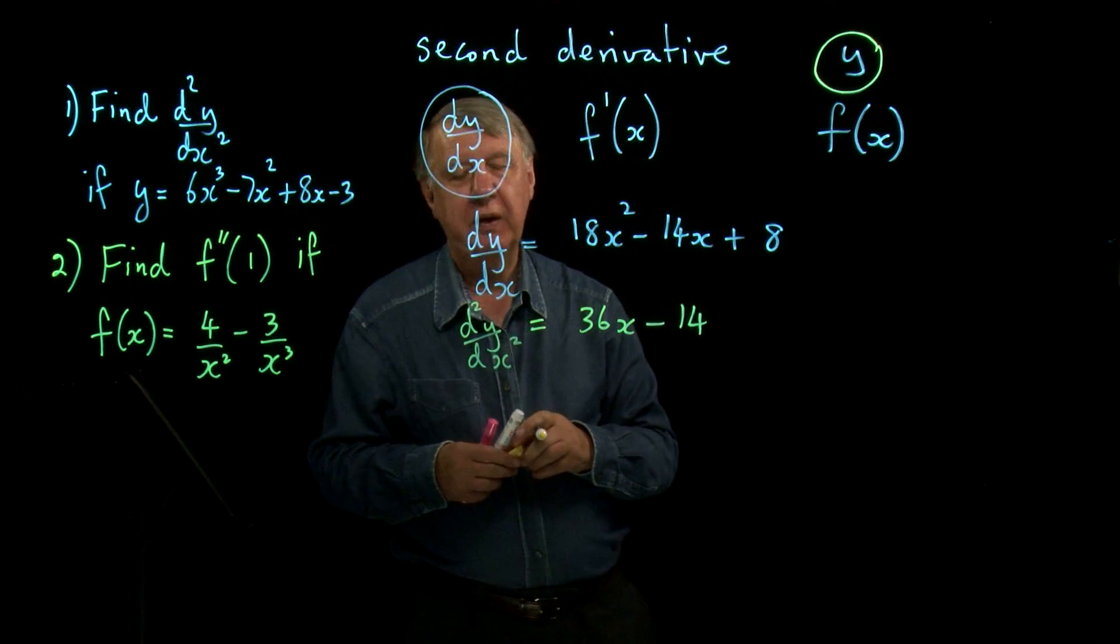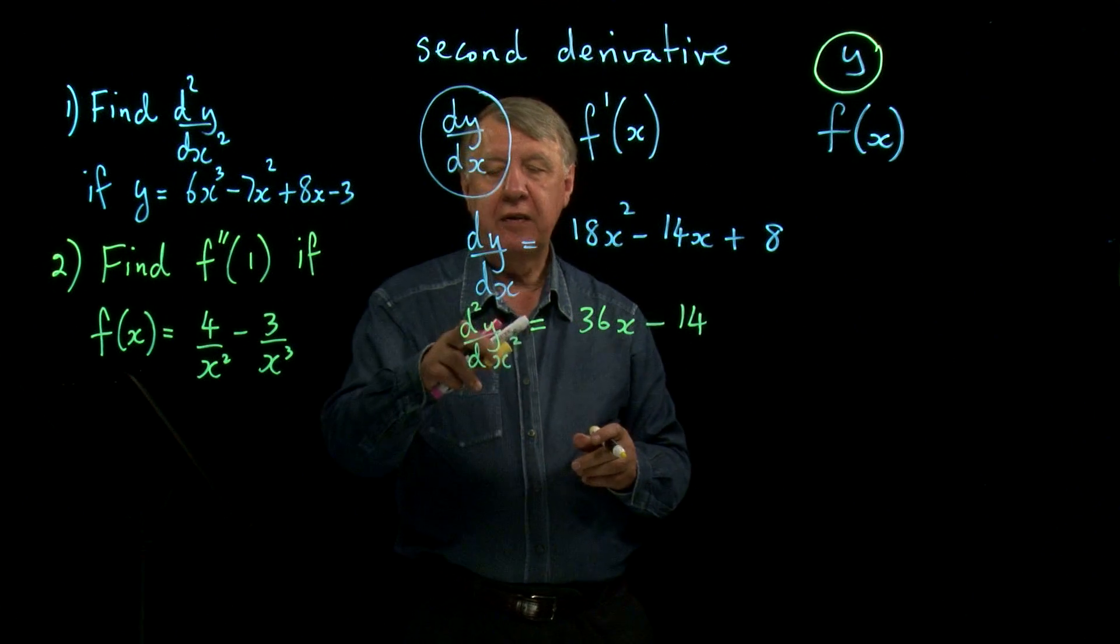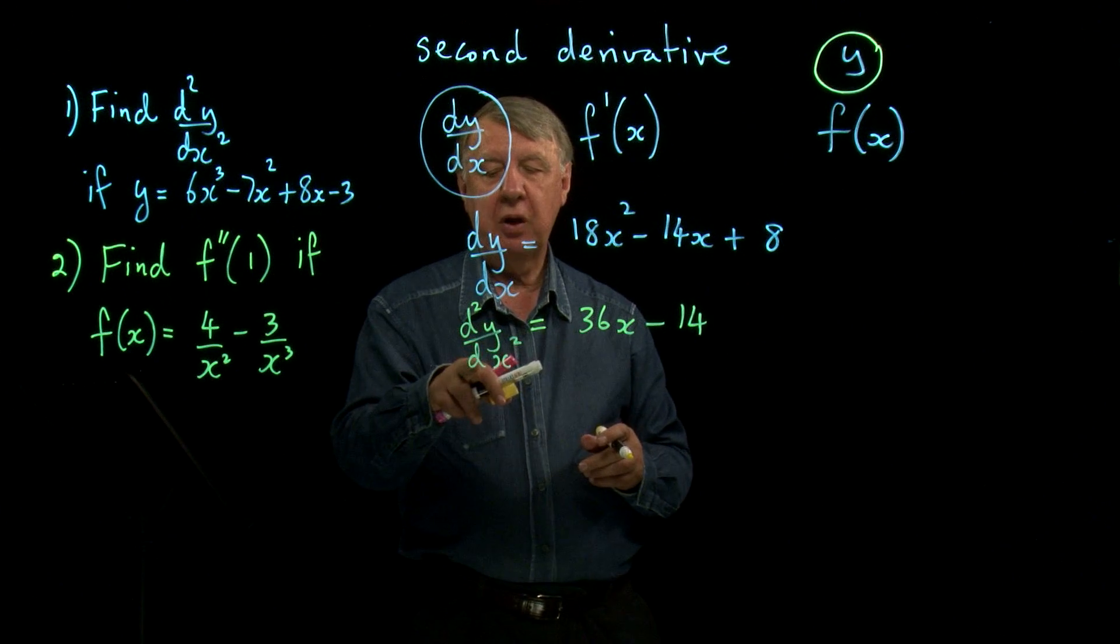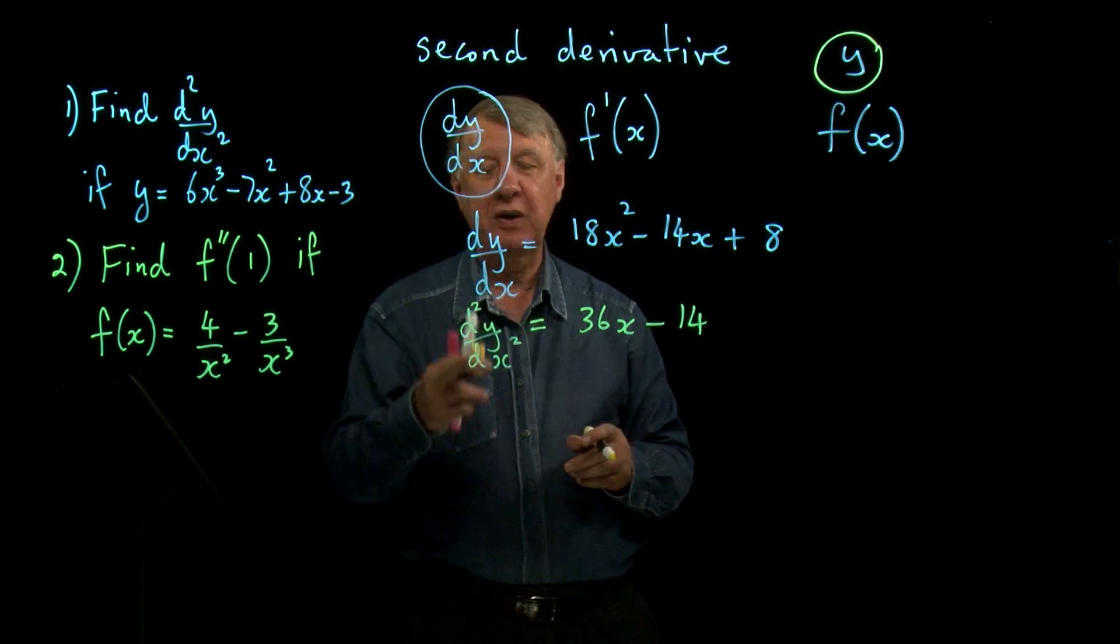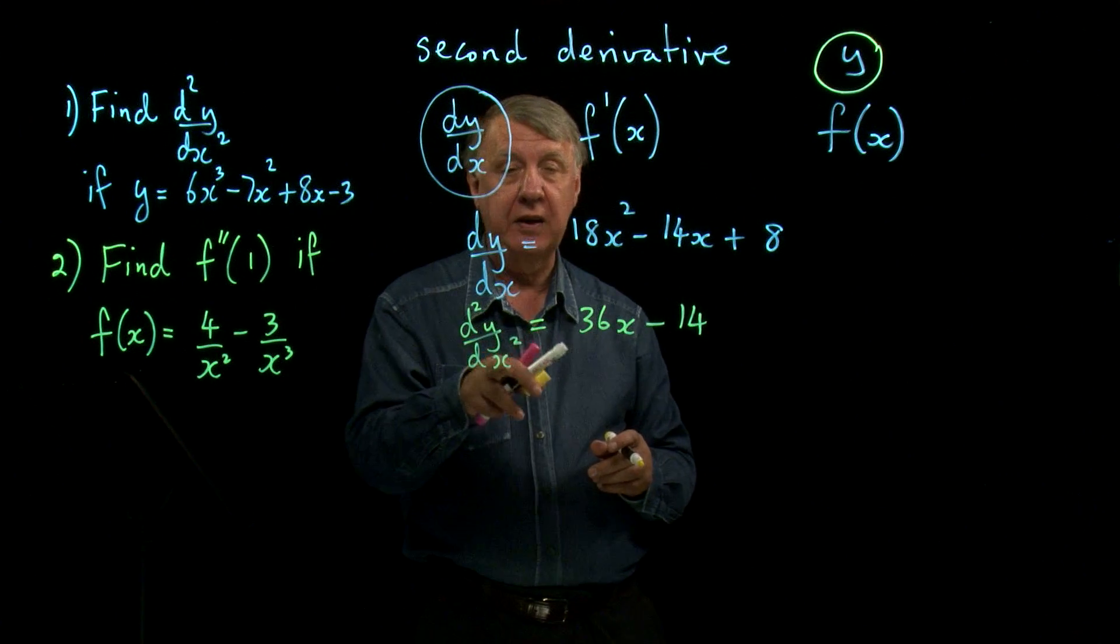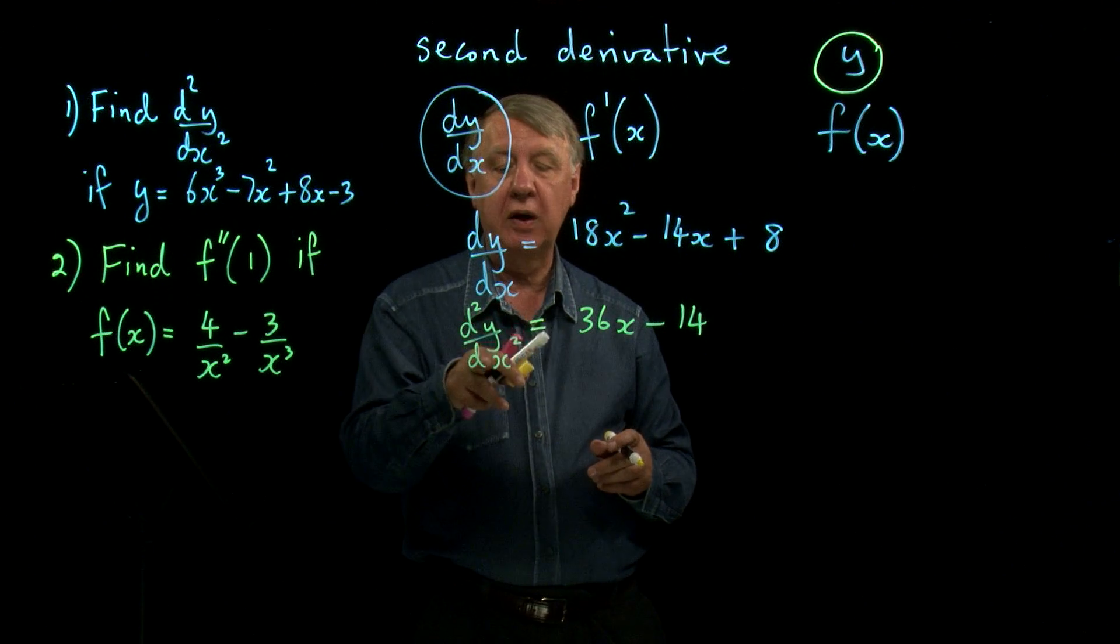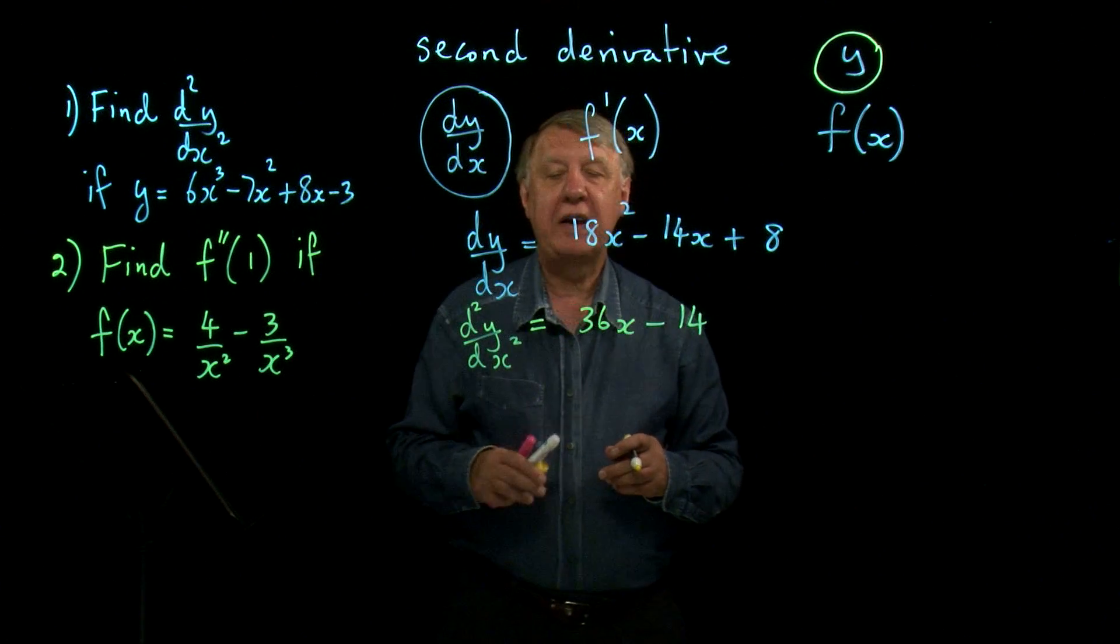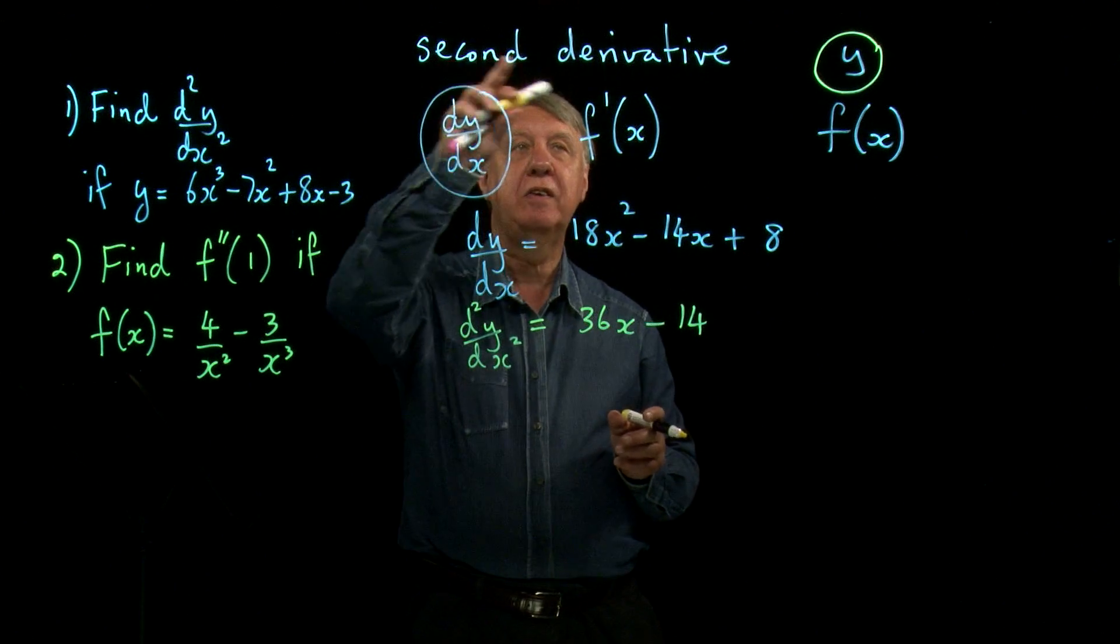And that's one way of doing it. And the way you read this is d2y by dx squared. You don't say d2y over dx squared. You say d2y by dx squared. And that is called the second derivative.